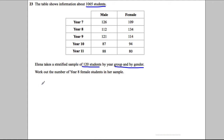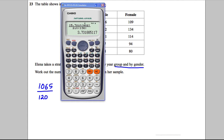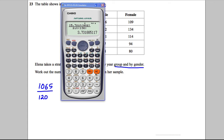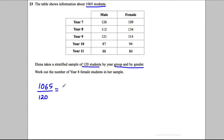So we divide 1065 by 120. Using a calculator: 1065 divided by 120 equals 8.875. This means that if we divide each group's count by 8.875, it will tell us how many we need to include in our sample.